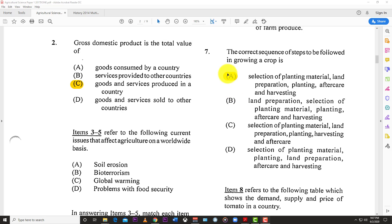Number seven: The correct sequence of steps to be followed in growing crops is: selection of planting material first, land preparation second, planting third, aftercare fourth, and harvesting. Some people might have land preparation first, but in my experience, a lot of people plan ahead and select what they're planting first before they prepare the land.